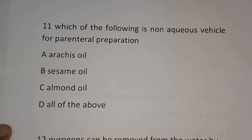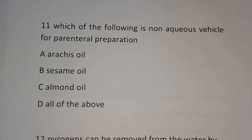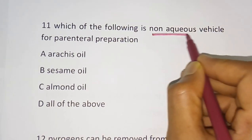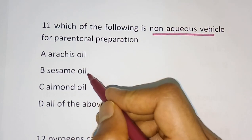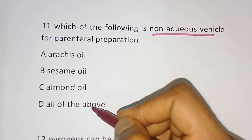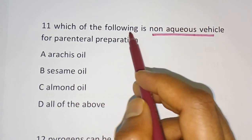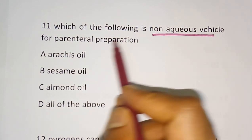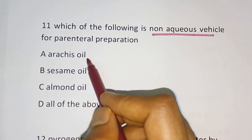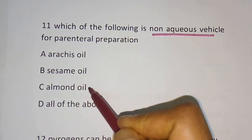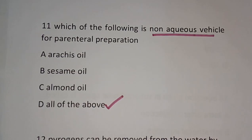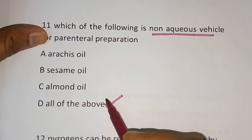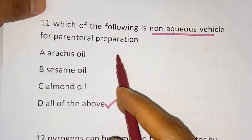Question 11: Which of the following is a non-aqueous vehicle for parenteral preparation? Options: arachis oil, sesame oil, almond oil, all of the above. The correct answer is all of the above. Arachis oil, sesame oil, and almond oil can all be used as non-aqueous vehicles for parenteral preparation.